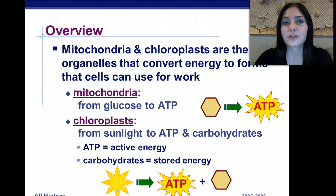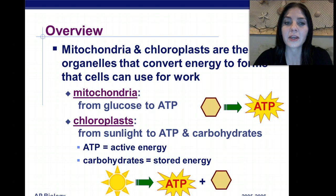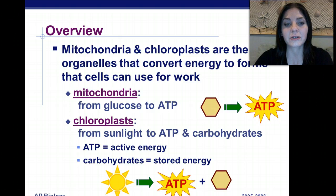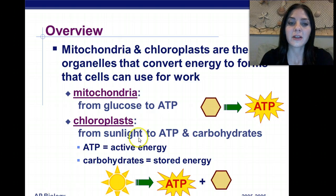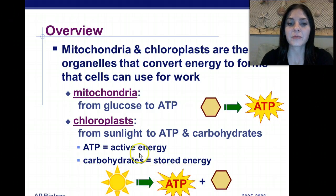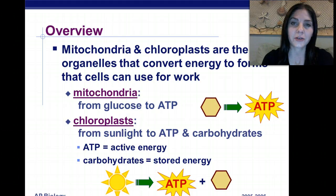Mitochondria converts glucose into energy in the form of ATP. Chloroplasts use energy from the sun to create ATP and carbohydrates. The ATP is the active energy, while carbohydrates are the form of stored energy.